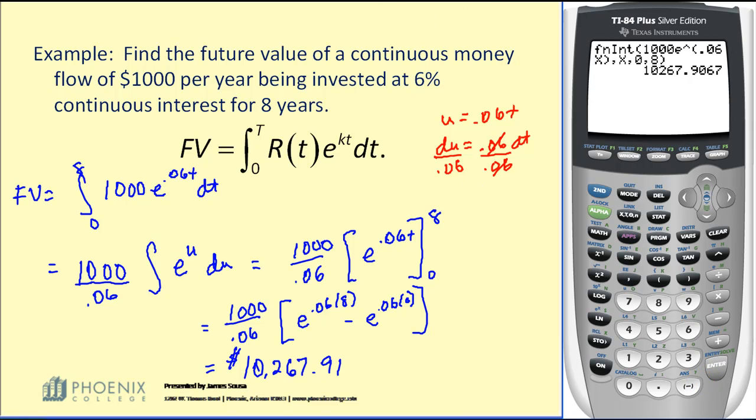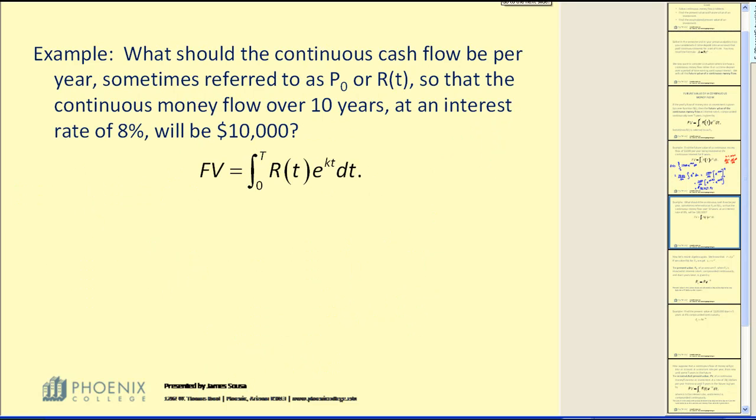Let's go ahead and take a look at another example. What should the continuous cash flow be per year, sometimes referred to as P sub zero or R of T, so that the continuous money flow over ten years at an interest rate of eight percent will be $10,000. So in this problem they're telling us we want $10,000 in the future. How much should we put into the account per year? So we're actually trying to find R of T.